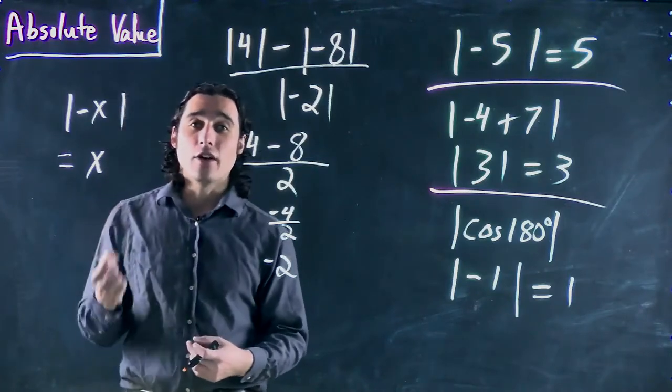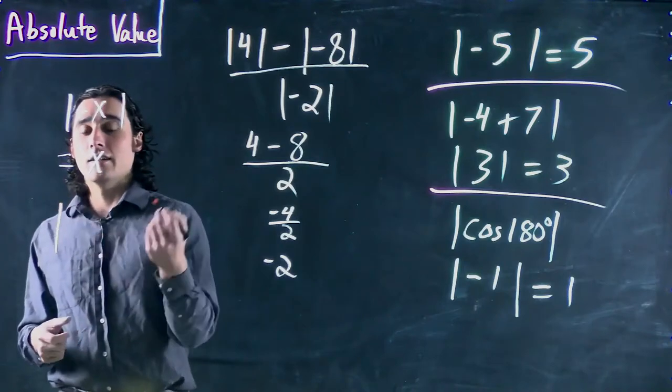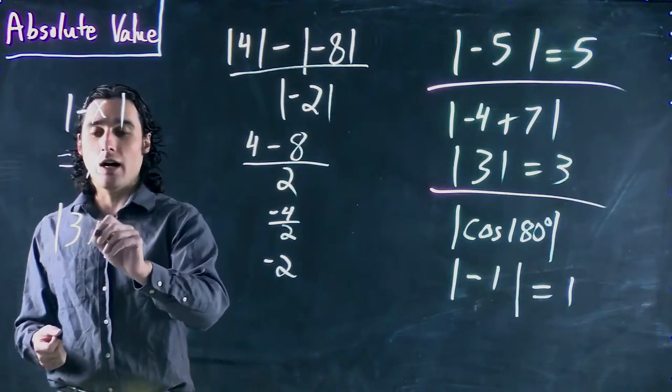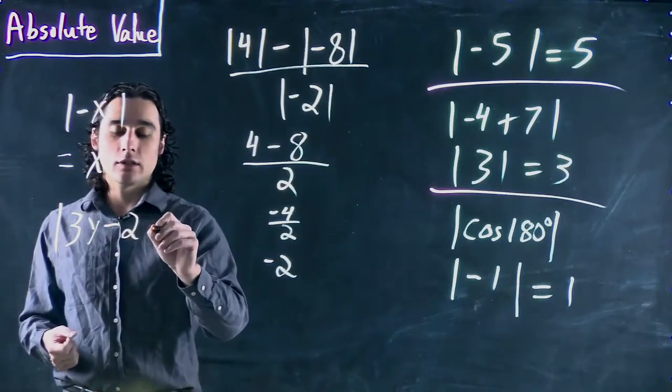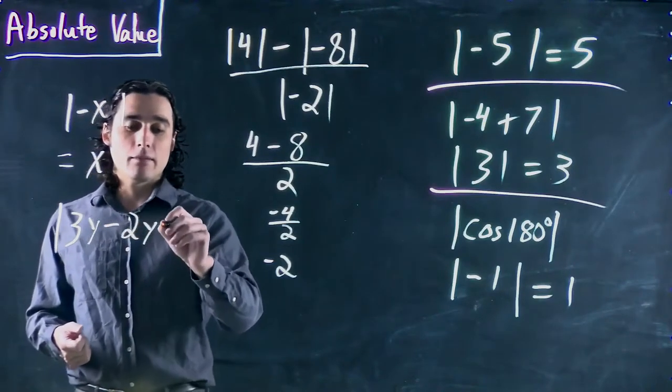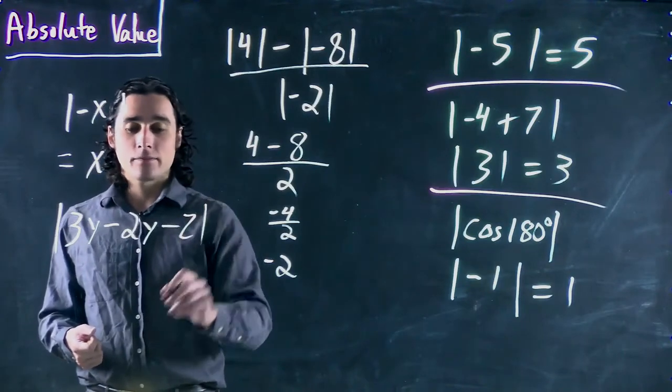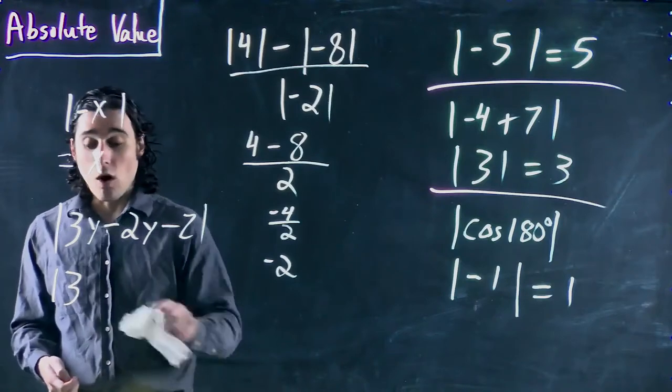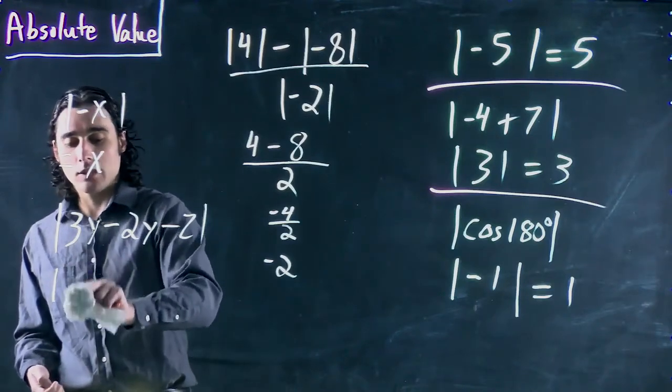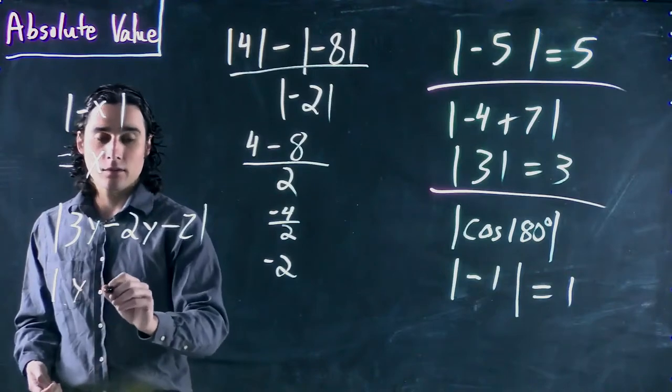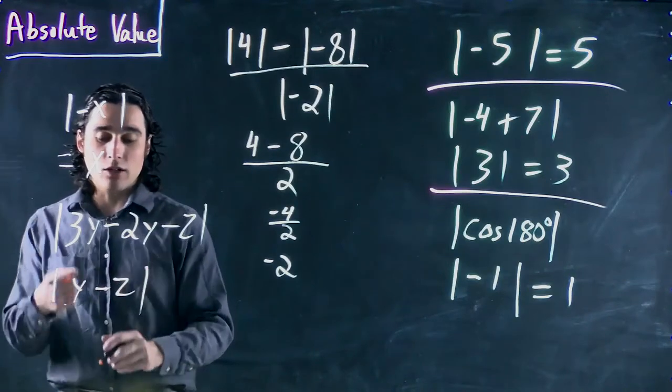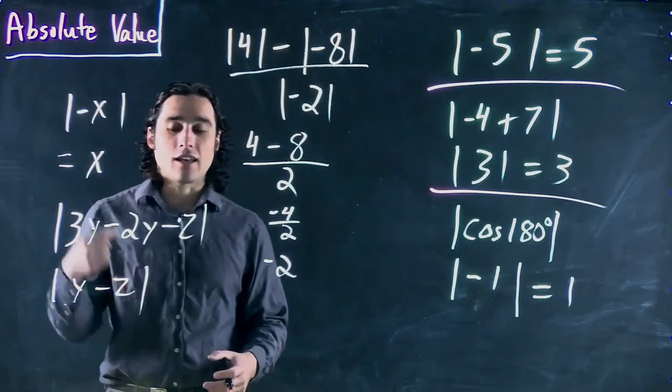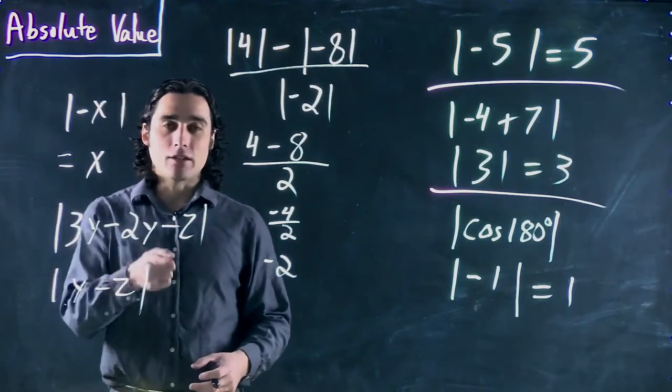Otherwise, no. So even if you had something like 3y minus 2y minus z, you could simplify it down. You could rewrite this as y, because 3 minus 2 is simply 1, or y minus z. But since we don't know anything about y or z, we can't evaluate this. So you'd have to leave it unless you were told something about these values.